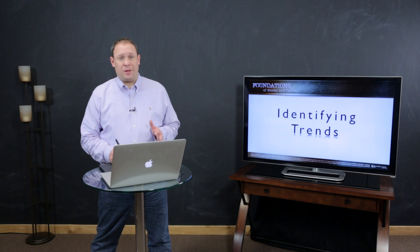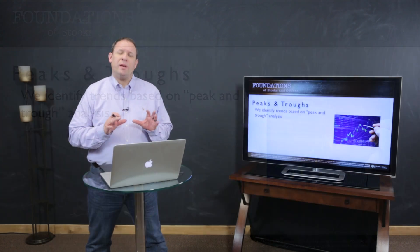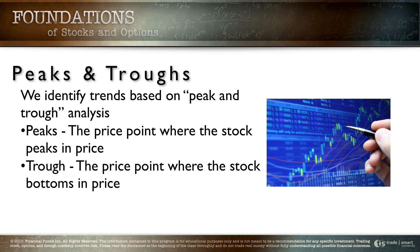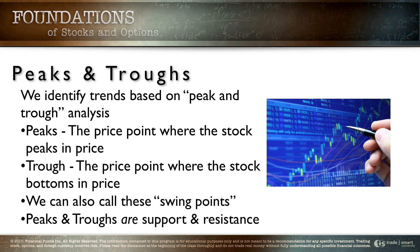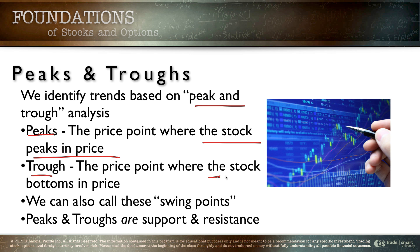So how do we identify these trends? It really comes down to a terminology we call peak and trough, or peak and valley. The idea is that we've got a price peak and a price bottom, which we call a valley or a trough. We identify trends based on peak and trough analysis. A peak is the price point where a stock peaks in price, and the trough is the price point where a stock bottoms in price. We can also call these swing points — that's a common terminology.